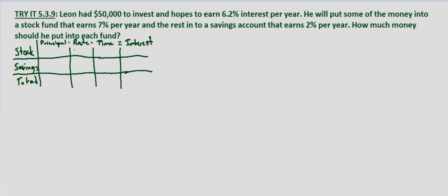Let's fill out the total row first. I went ahead and made a little table: principal times rate times time equals interest — I equals PRT. We know that he has a total of $50,000 to invest, and he wants the rate to be 6.2%, which is 0.062.